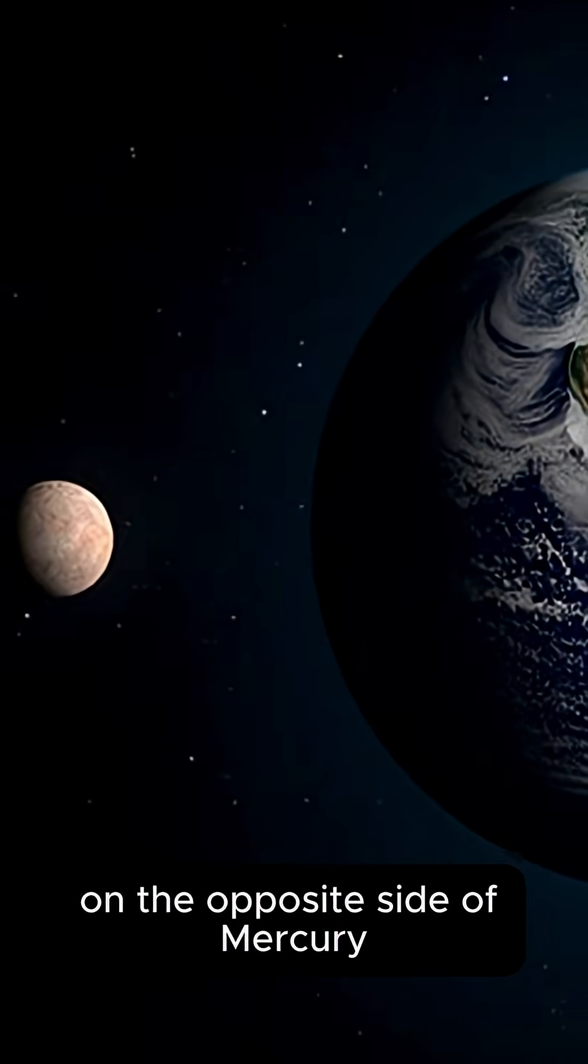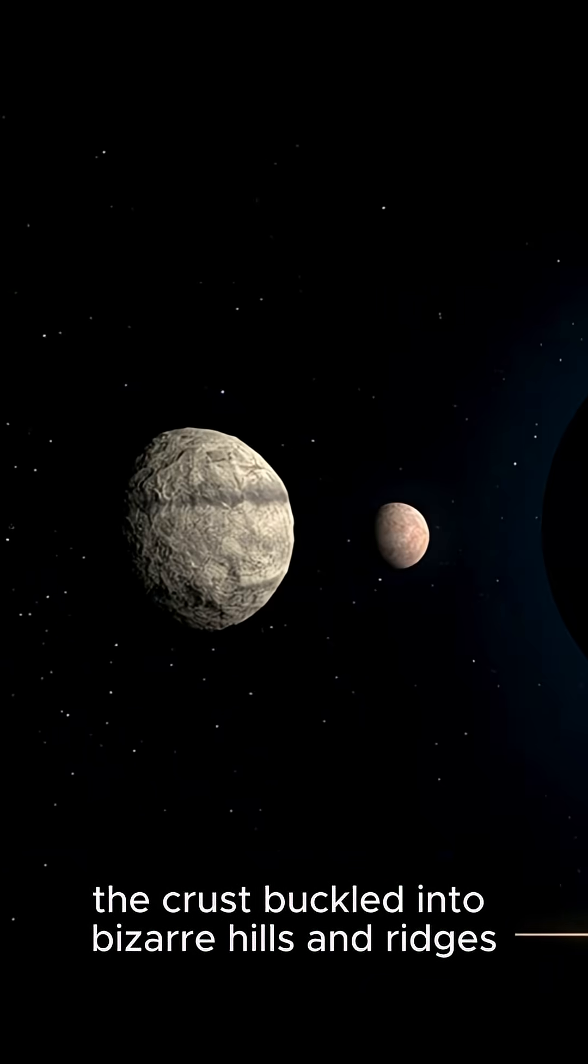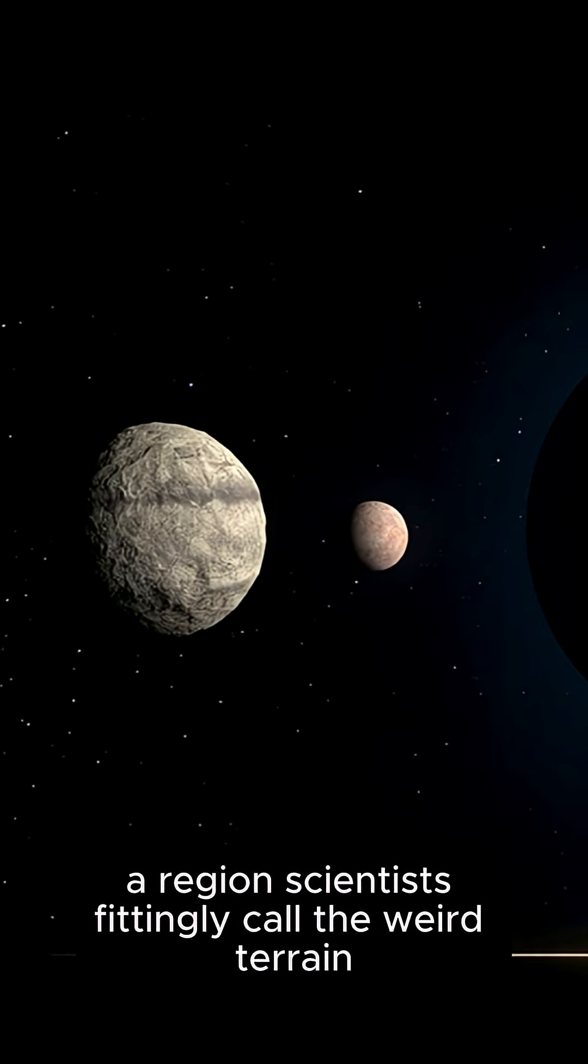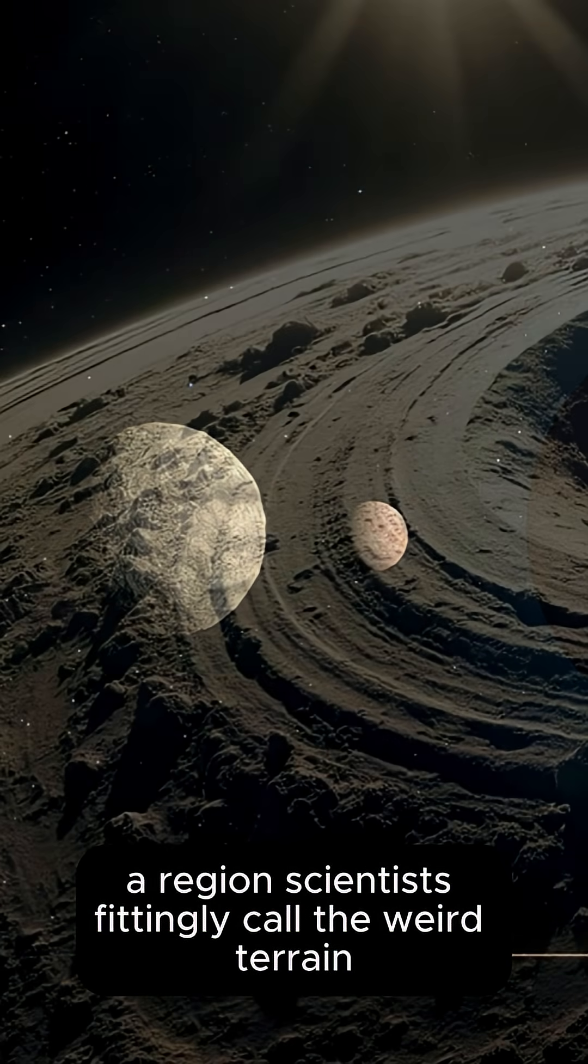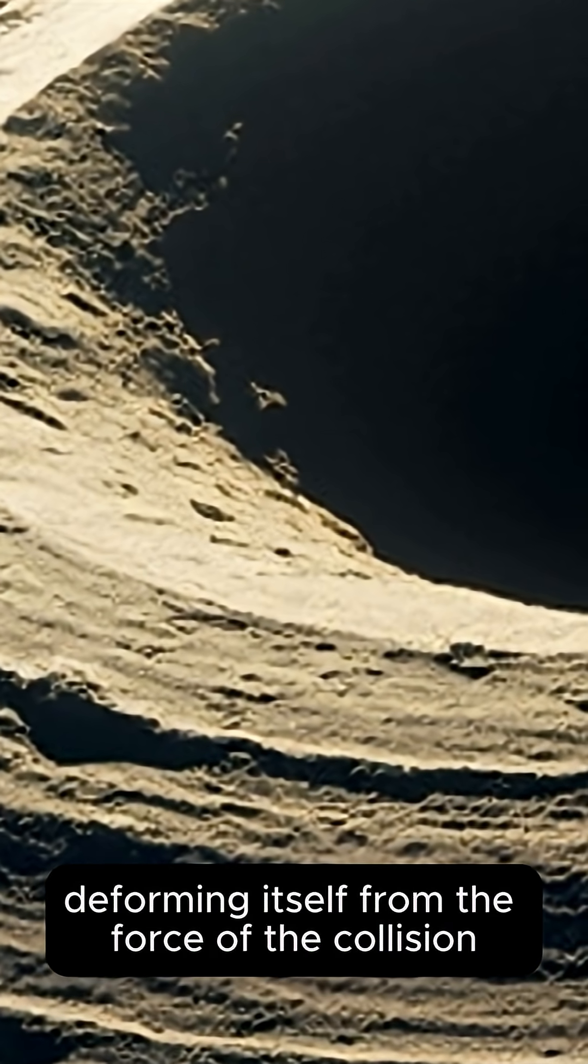On the opposite side of Mercury, the crust buckled into bizarre hills and ridges, a region scientists fittingly call the weird terrain. It is as if the whole planet rang like a bell, deforming itself from the force of the collision.